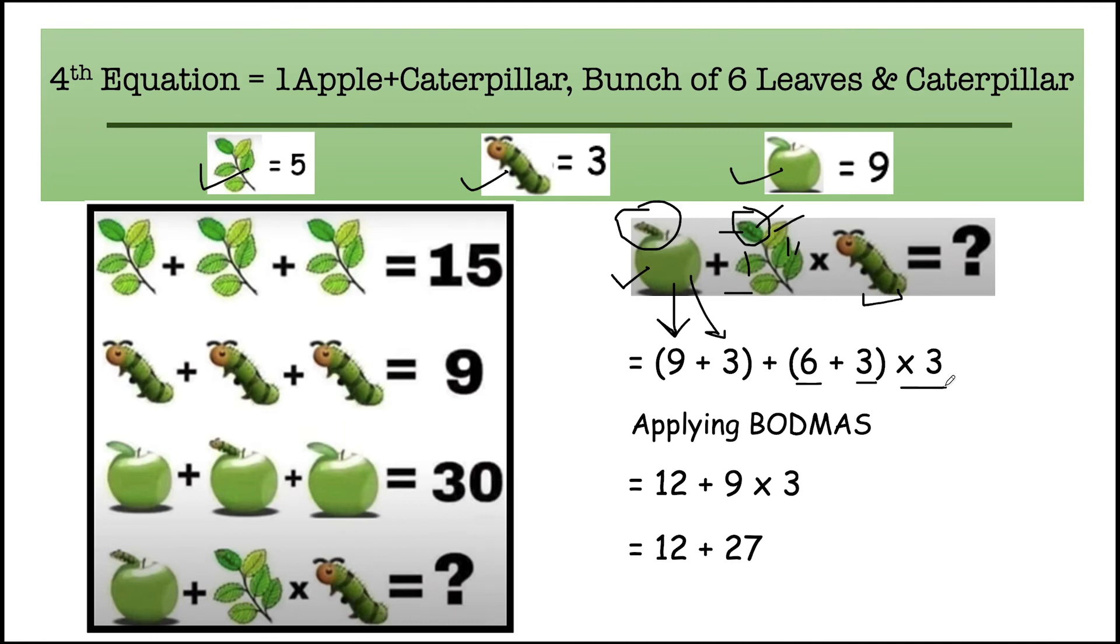And multiply it by one caterpillar's value that is equal to three. Now applying the BODMAS rule, we have to first solve the brackets. So nine plus three equals twelve, six plus three equals nine, and we have to multiply it by three.